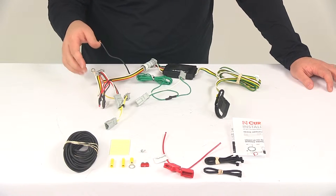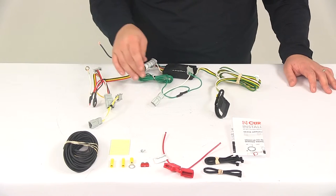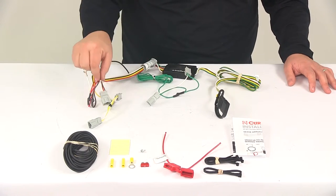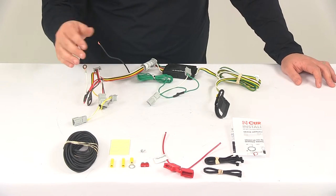Now this is a custom fit harness, so these plugs match up perfectly with the ports on the vehicle. So you have one that goes to the passenger side and then the couple that connects over on the driver's side of the vehicle. Once you get those plugged in,